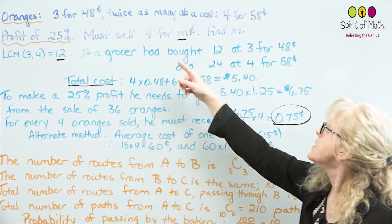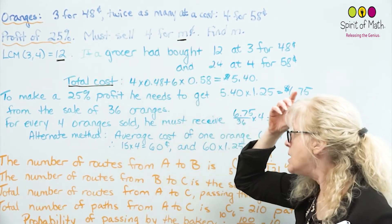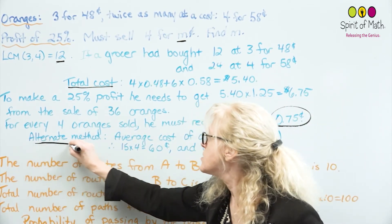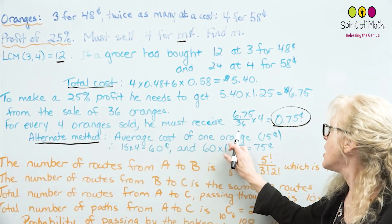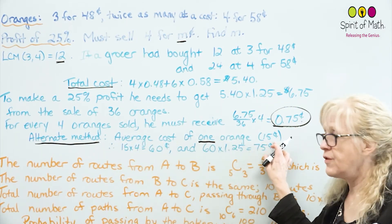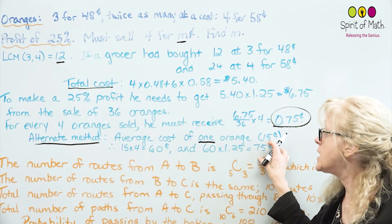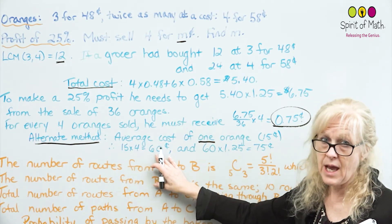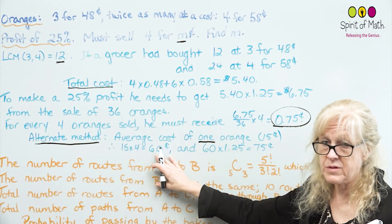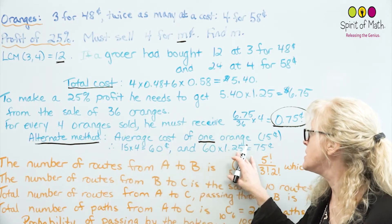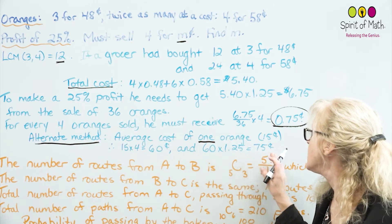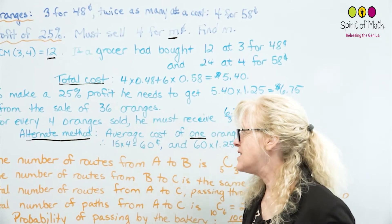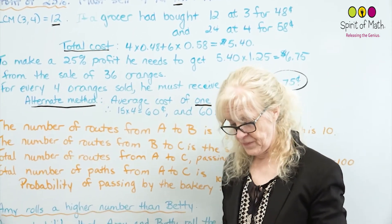An alternative method is to find the average cost of one orange, which is 15 cents. Multiply by 4 to get 60 cents for four oranges, then add 25%: 60 × 1.25 = 75 cents. Either method works; it's just for you to understand what's going on.